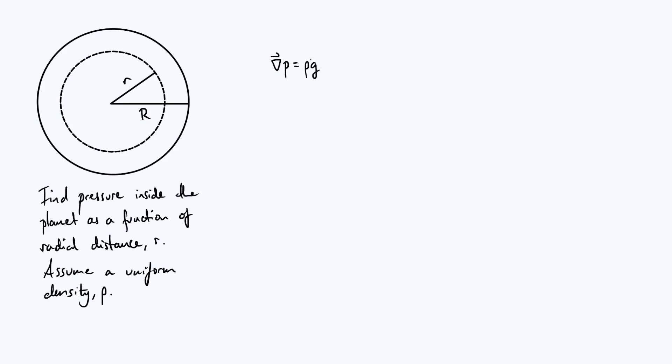So grad p equals ρg, and if you'd like to see a formal full derivation of that have a look at my last video. But if we take this hydrostatic equilibrium condition as our starting point, as long as we know g as a function of radial distance r, then we have a differential equation for the pressure that we will be able to solve.